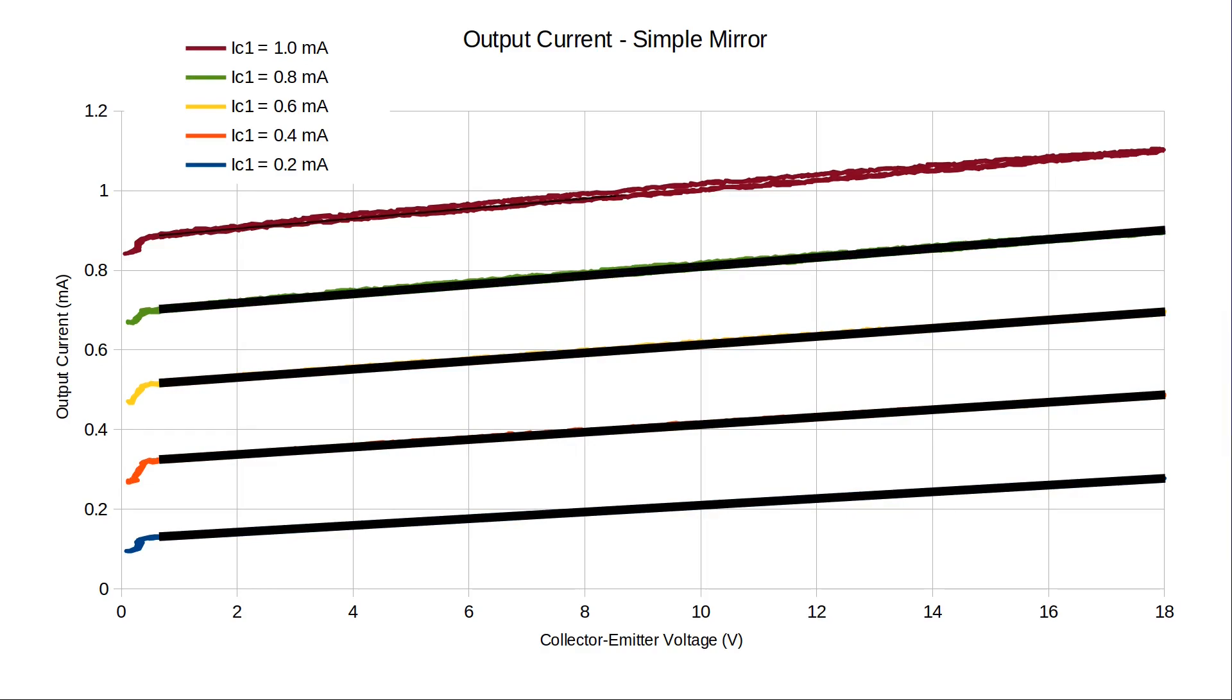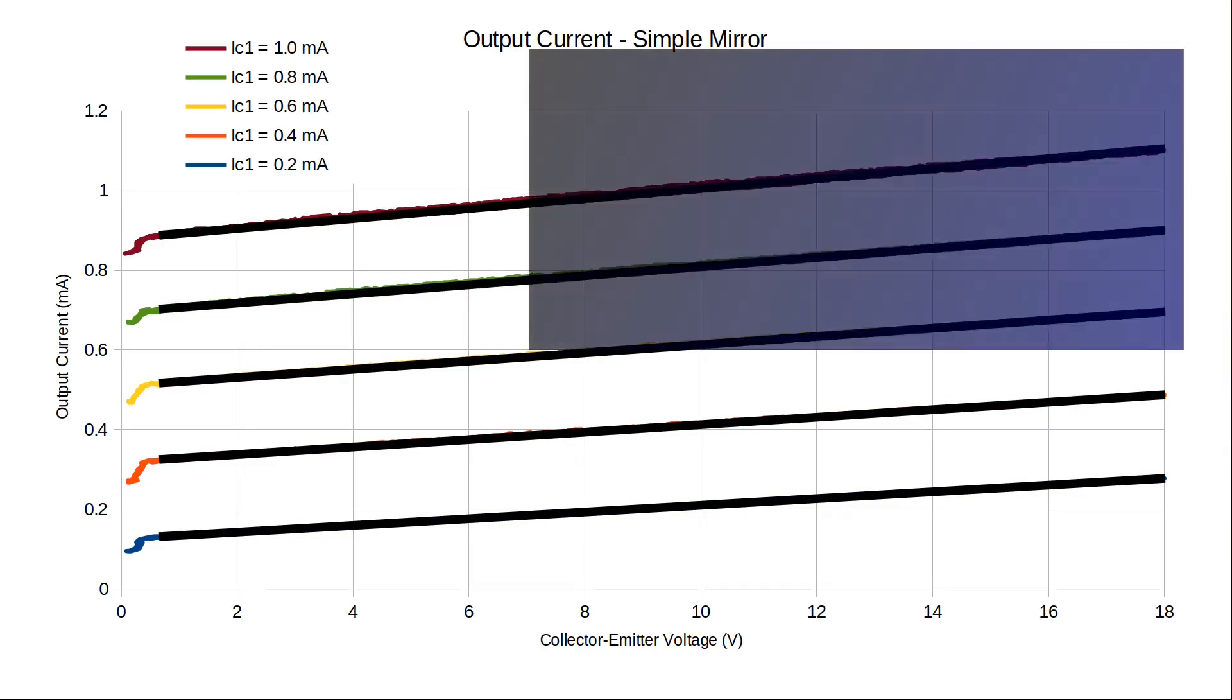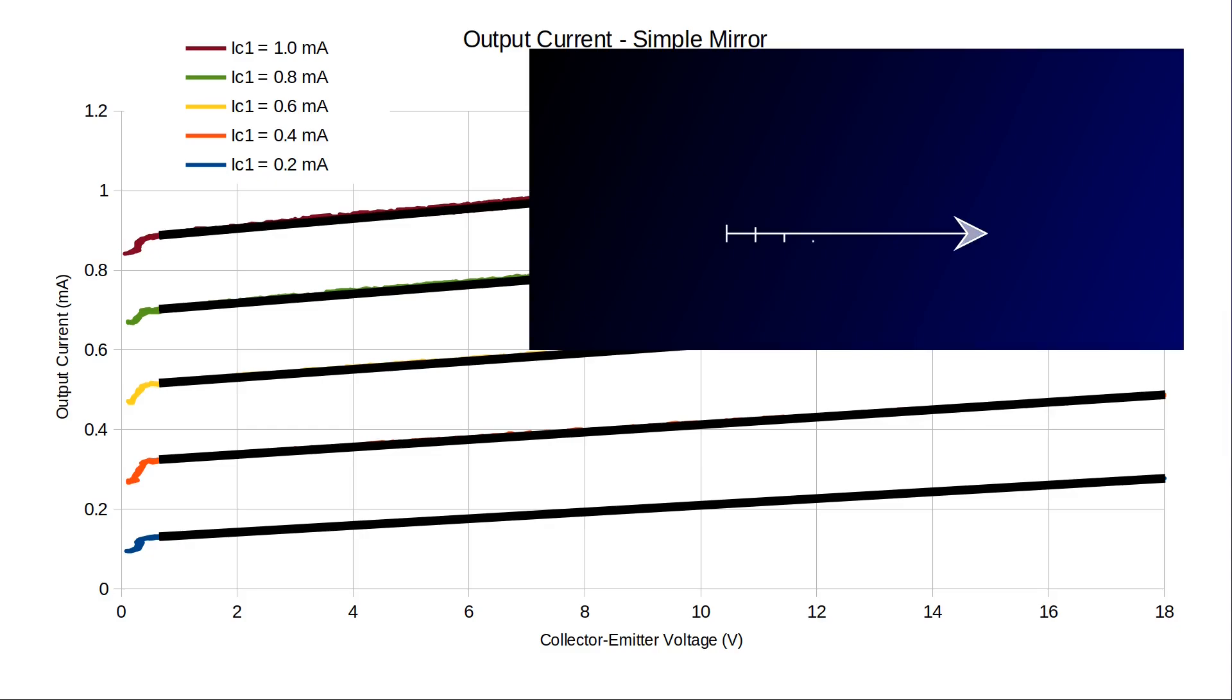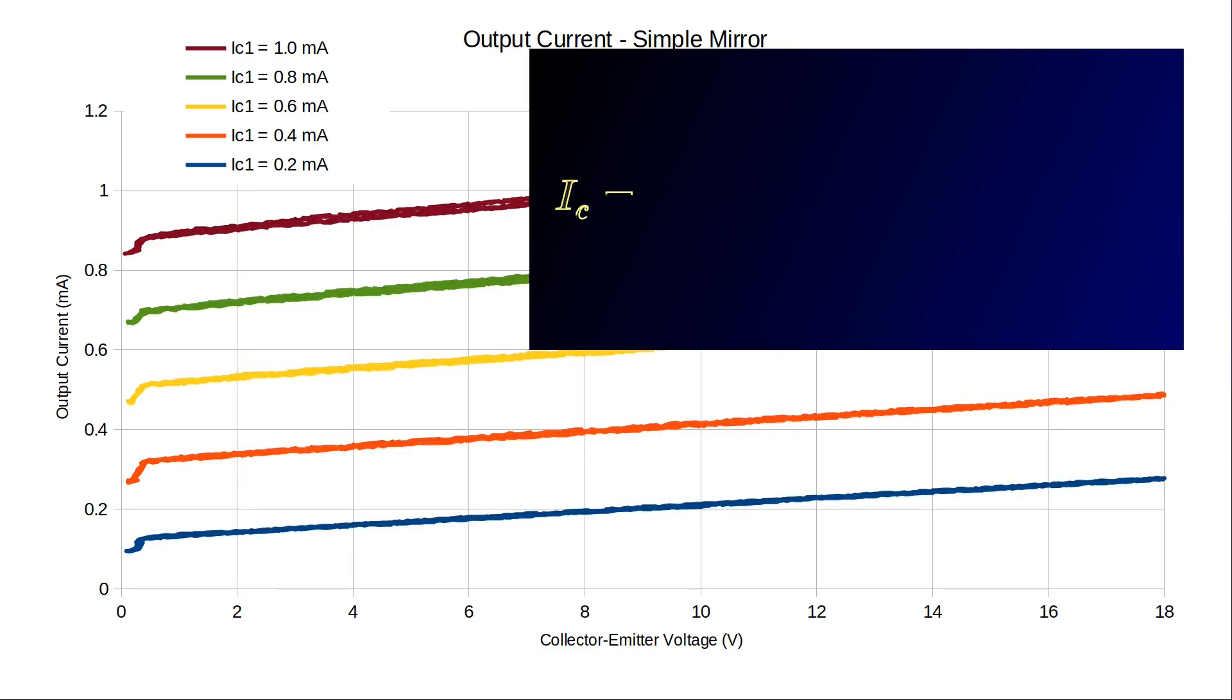When we look at the current voltage relationship at each programming current level, we see that it's nearly linear. The point where one of these straight lines crosses the voltage axis is called the early voltage, and denoted V sub capital A.